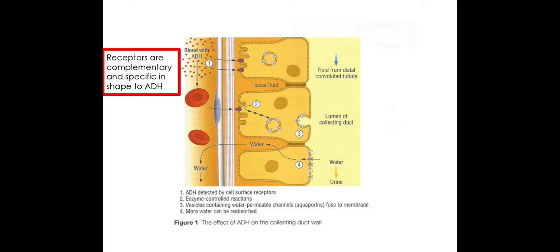The receptors on these walls that line my collecting duct here, these receptors will be complementary and specific in shape to the ADH, the hormone that has been transported in the blood. So on the left-hand side here is the blood supply that lines the nephrons, and on the right-hand side here this is the lumen of the collecting duct, this is where the urine is being collected. So the first thing that happens is my ADH is attaching to these complementary and specific in shape receptors on the walls of the collecting duct, the cells that line those walls.